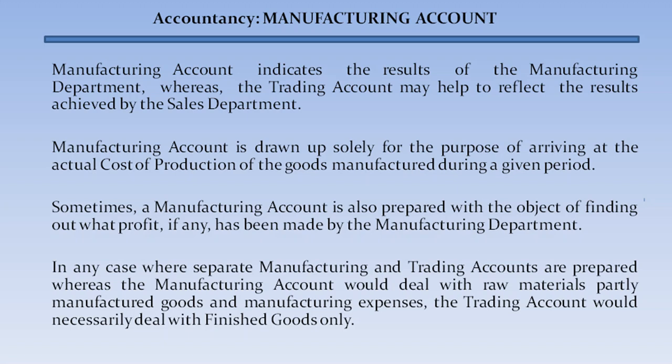The manufacturing account is drawn up solely for the purpose of arriving at the actual cost of production of goods manufactured during a given period. Sometimes a manufacturing account is prepared with the object of finding out what profit, if any, has been made by the manufacturing department. Where separate manufacturing and trading accounts are prepared, the manufacturing account deals with raw materials, partly manufactured goods, and manufacturing expenses, while the trading account deals with finished goods only.